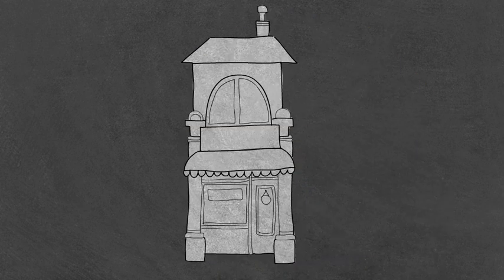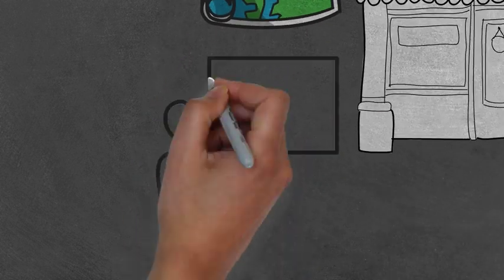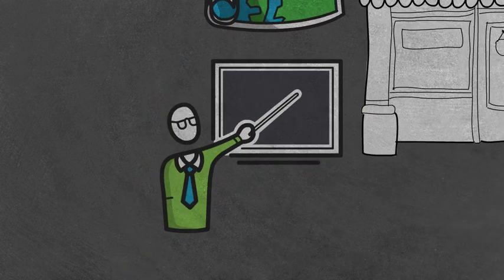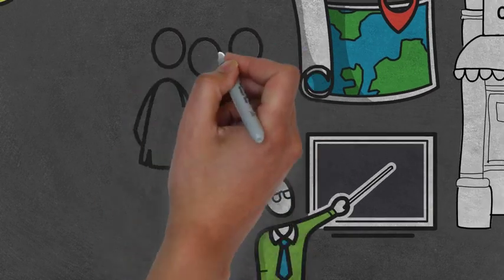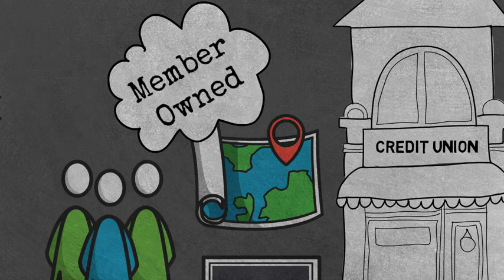Credit unions, on the other hand, generally restrict membership, for example, to residents of an area or those in a particular profession. Like building societies, their owners are their members, any of whom can stand for the board.